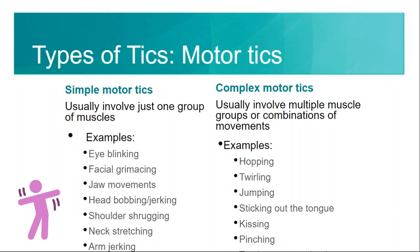Types of tics: we have motor tics and vocal tics. Starting with motor tics — we have simple motor tics and complex motor tics. The simple ones are ones that people might not even notice, depending on the severity. You can blink your eyes, but then blink them so severely it's more of a facial grimace. Simple motor tics also include jaw movements, head bobbing or jerking, shoulder shrugging, neck stretching, and arm jerking.